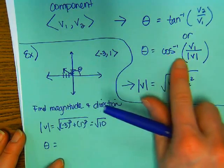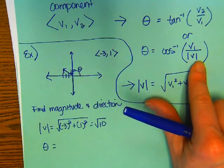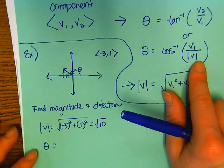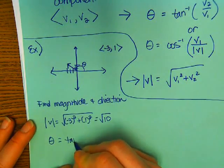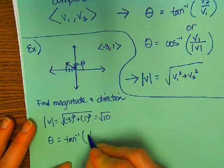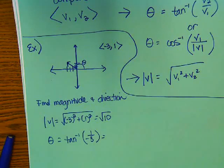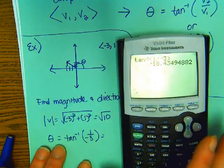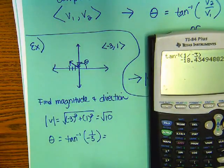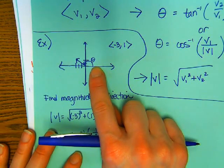Okay. So, to find theta, these are my two options. I can either take the tan inverse of 1 over negative 3 if I want or the cosine inverse of v1 over the magnitude, which I have to have those things anyway in the problem. Okay. Let me show you what tan inverse, what will happen with tan inverse. So, if I do tan inverse of v2 over v1, 1 over negative 3. Let's do that. Let's do what I got here. Make sure you're in degree mode. I get negative 18 degrees. Is that what you get?